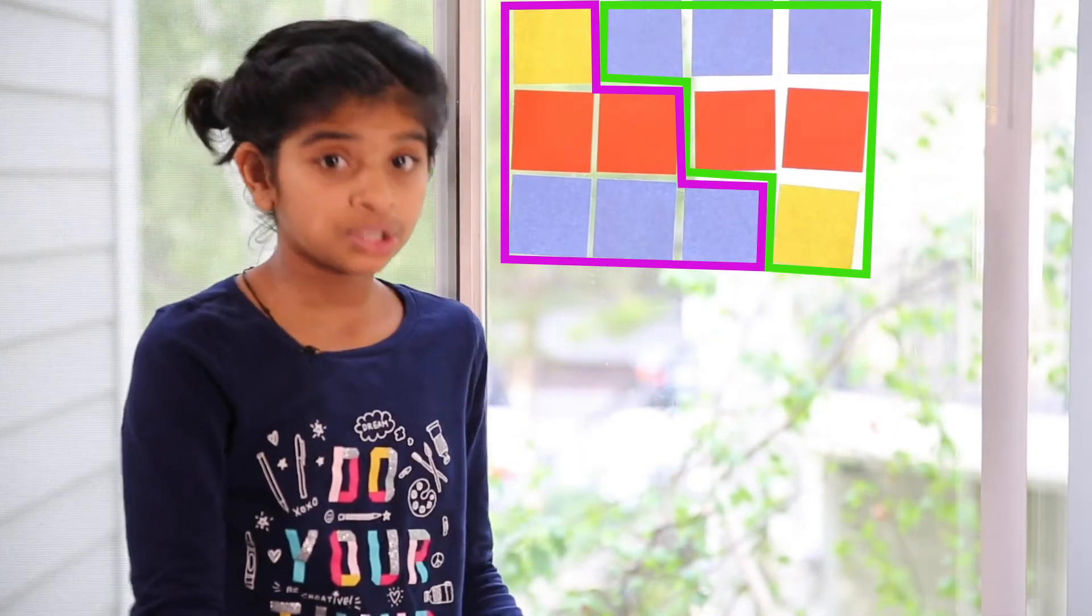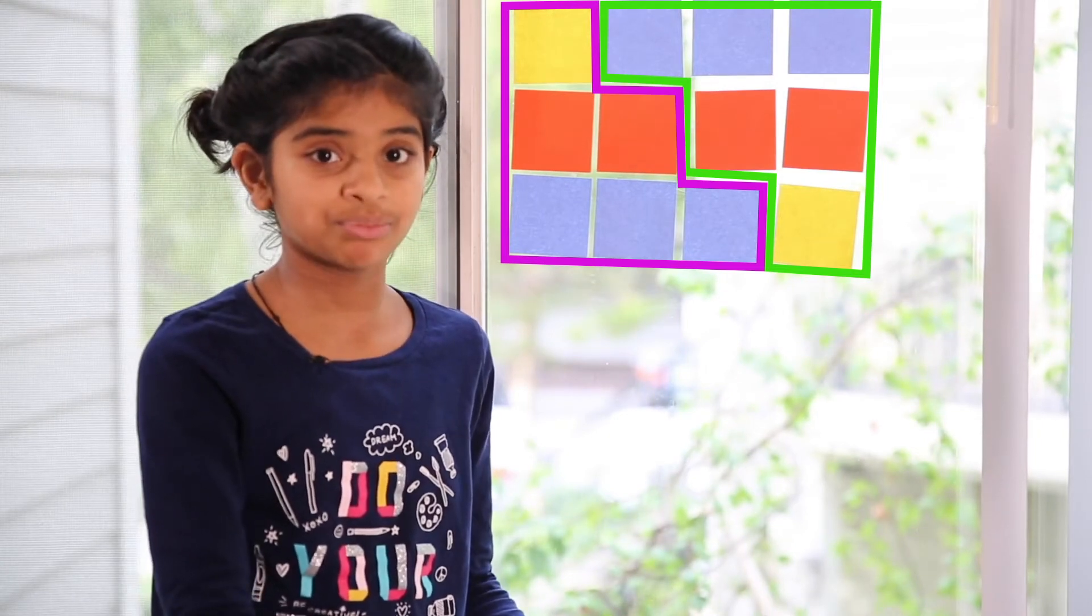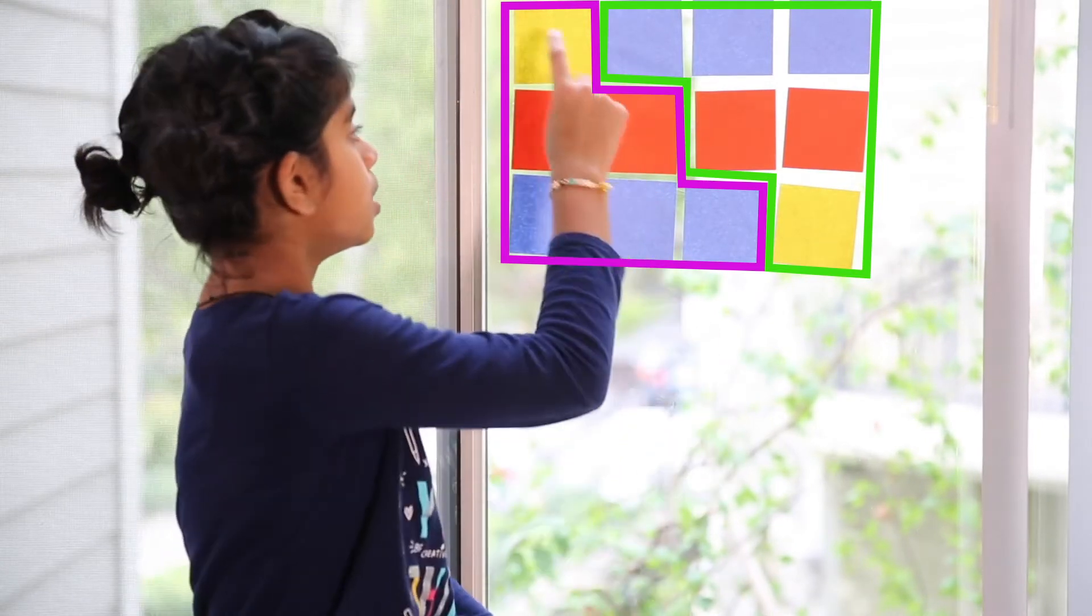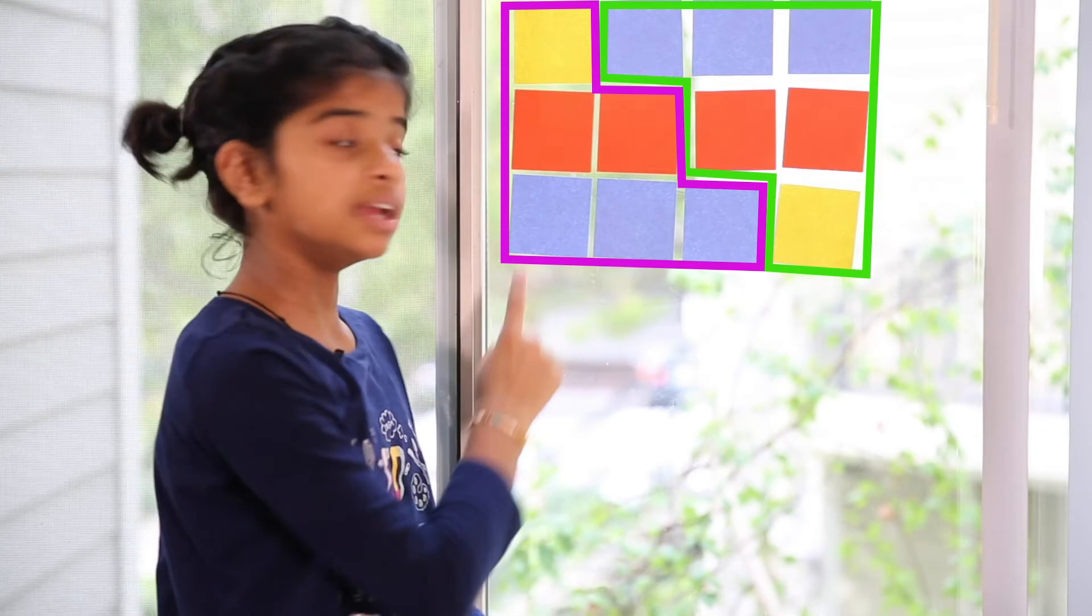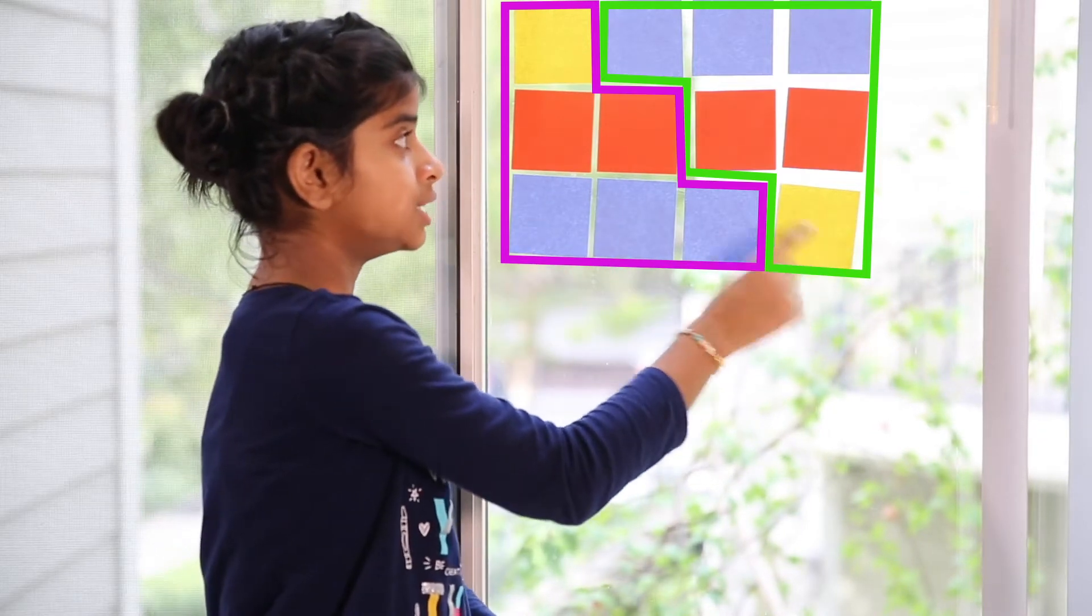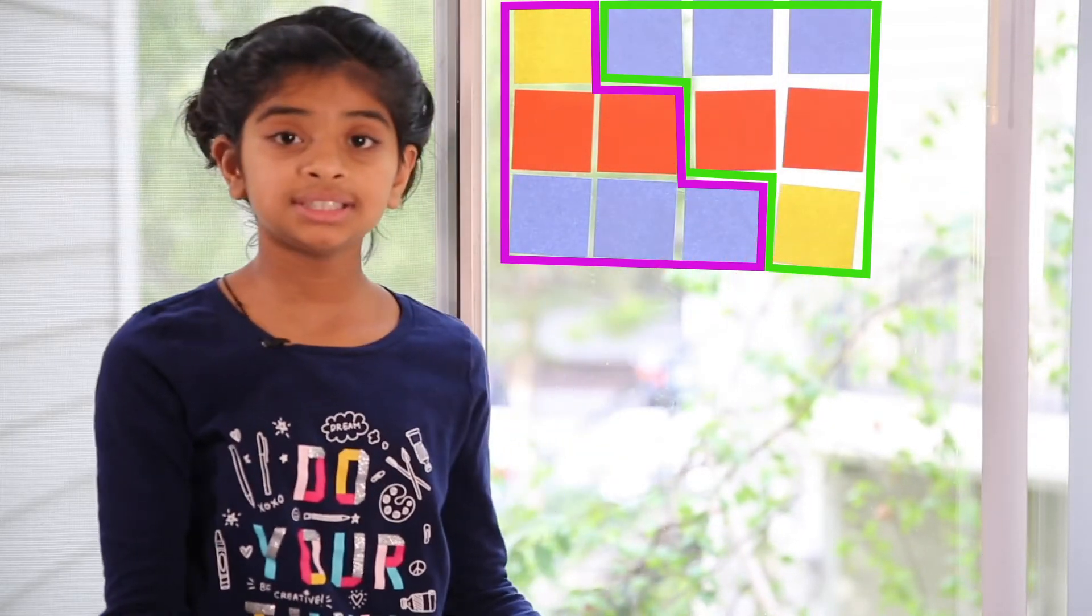Now this totally looks like a multiplication problem. We just multiply now. 1, 2, 3 times 1, 2, 3, 4. So that means there are 12 sticky notes here.